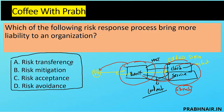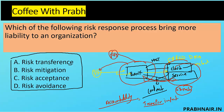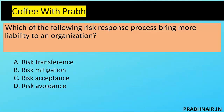We transfer the financial impact to a third party, but we cannot transfer accountability. Similarly, in mitigation there is residual risk left, which is also a liability. Acceptance also brings liability. Avoidance does not bring liability, so B is removed. Among the remaining options, the closest answer — the one that brings the most liability — is C, because sometimes accepting untreated risk brings the most liability. The answer is C.